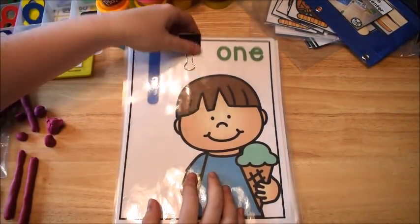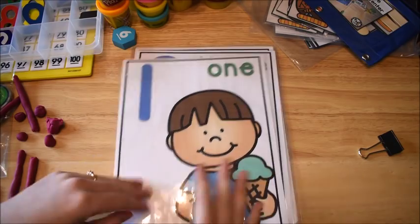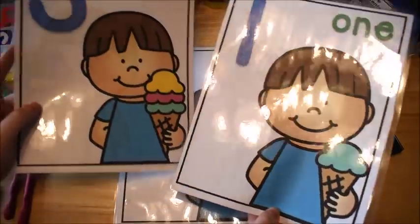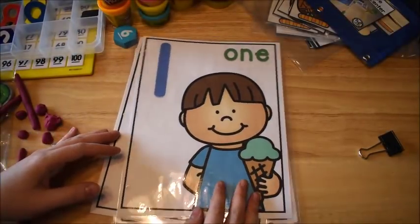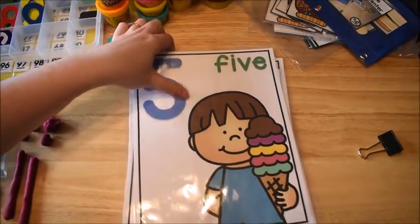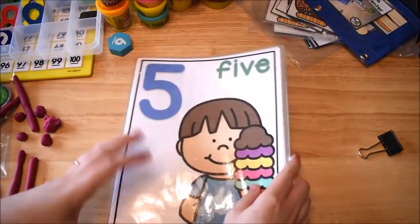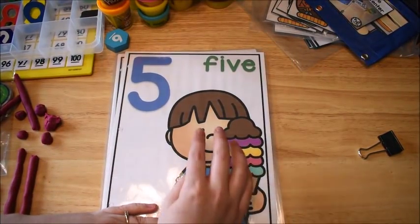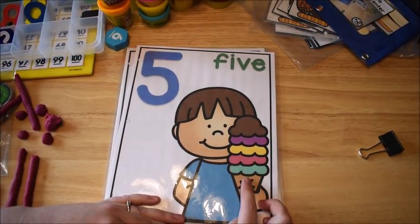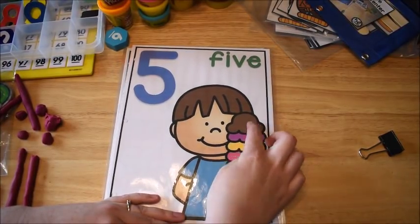Okay, so along that same line, these number mats come from my early learner's math curriculum, the very first unit. The first unit is on counting to ten. And on these ones, it has a child and he's representing the number with his ice cream scoops.